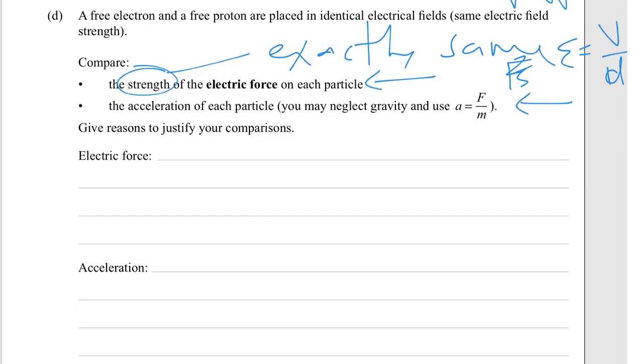So D doesn't change, V doesn't change, so E doesn't change. E is going to be the same. And F = EQ, so if E is the same and Q is the same, then F is going to be the same.